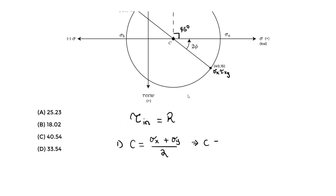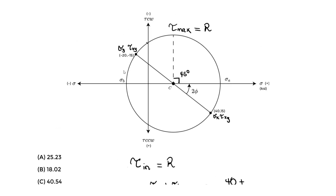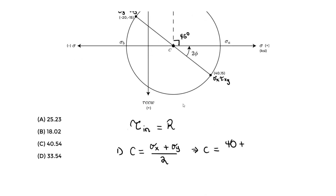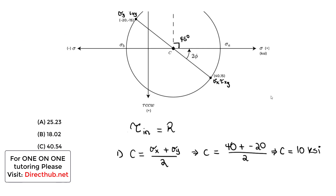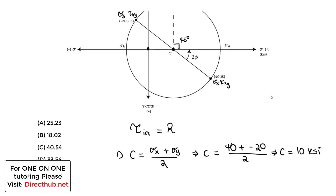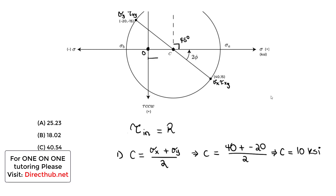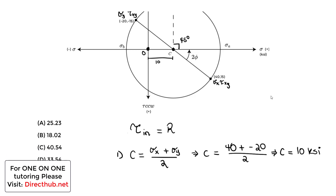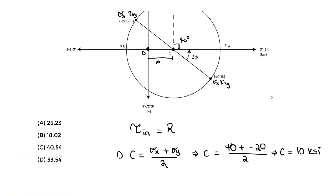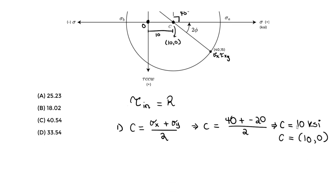The center equals sigma x, which is 40, plus sigma y, which is negative 20 — keep that negative — divided by 2. That gives us 10 KSI. So the center is located 10 KSI to the right on the sigma axis from the origin. The coordinates for the center are (10, 0): we move 10 KSI in the x direction and do not move up or down in the y direction.